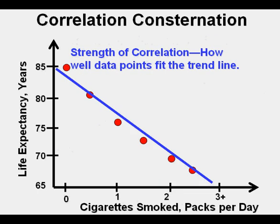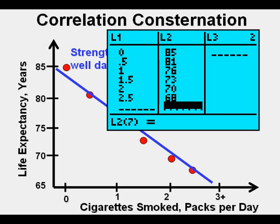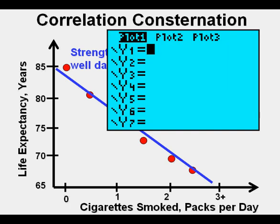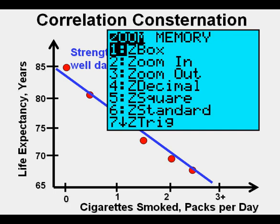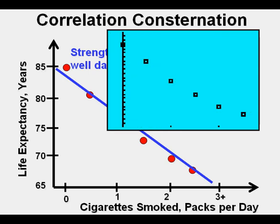Now I want to look at the other scatter plot — the correlation between the amount of cigarettes smoked and life expectancy. This relationship seems more strongly correlated than the one with the 0.7 R value, and I also want to see if there is anything different about a negative correlation situation. Here are all the points entered under L1 and L2 — I invite you to do the same on your graphing calculator. Go to Y equals, clear out any equations, then press ZOOM, scroll to 9 ZOOM STAT, and press ENTER. We see our points plotted looking quite a bit like those in the original graph.